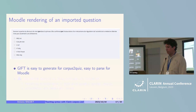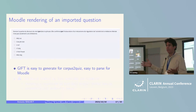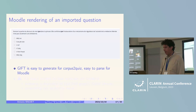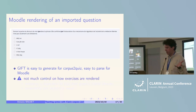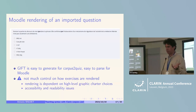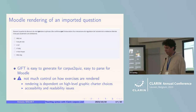Here is the rendering of an imported question. I know it's ugly but it's not my fault — we've just had a Moodle update at Université de Lille. GIFT is a good compromise because it's easy to generate and parse for Moodle, but you don't have much control over how exercises are rendered. If there's a high-level change in the graphic charter, you end up with ugly quizzes. There are also accessibility and readability issues that you can control.